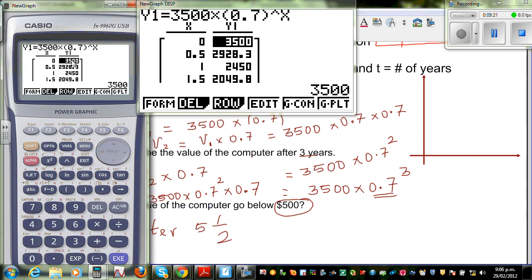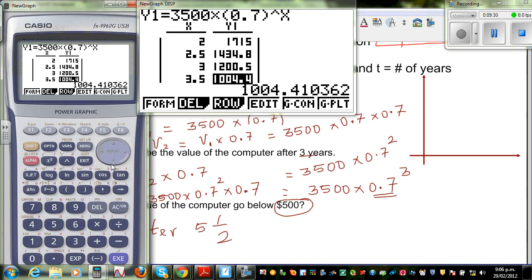So when it is 0 years, it is 3000. So after 6 months, it is 2900 and 28.8 and so on. So let me go at 5.5 years. So when it is 5.5 years, it is 492.16. This is below $500.